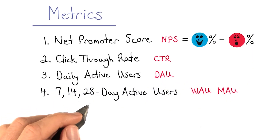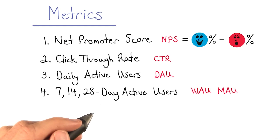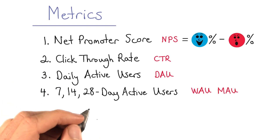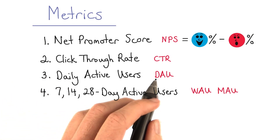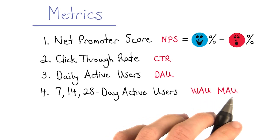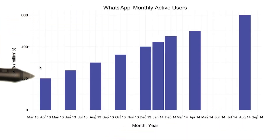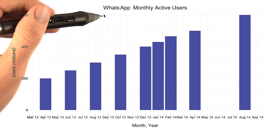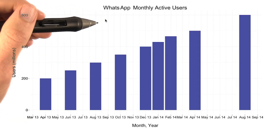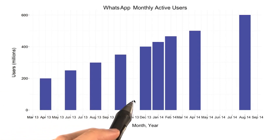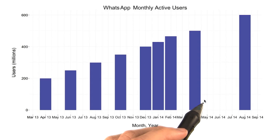These next three metrics are similar to daily active users, except you're tracking active users over some defined period of time. So instead of daily active users, you might have weekly active users or monthly active users. Here's a bar chart showing monthly active users for WhatsApp, a popular mobile messaging application. Some bars are missing simply because the data source didn't have that information.